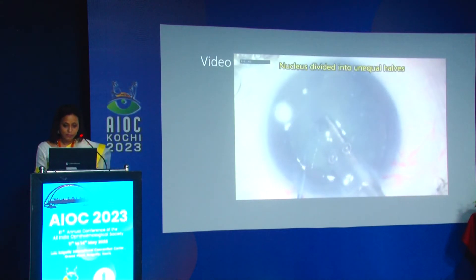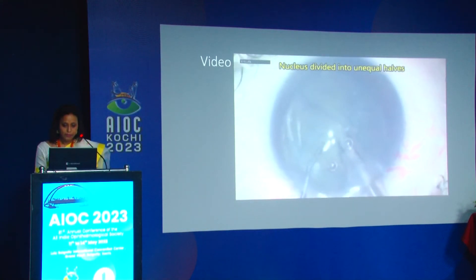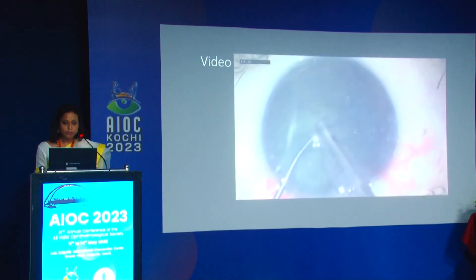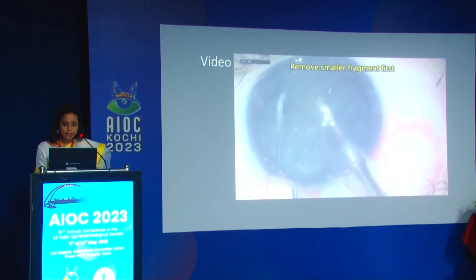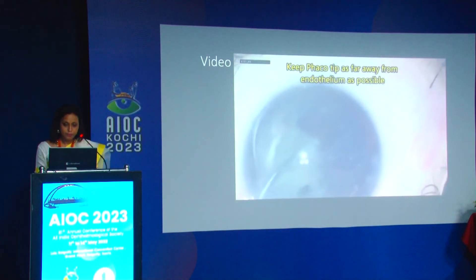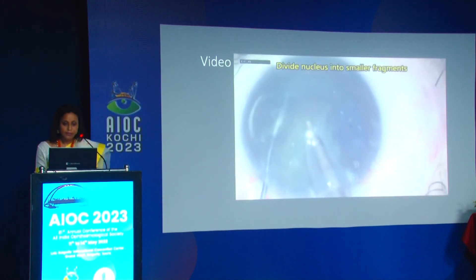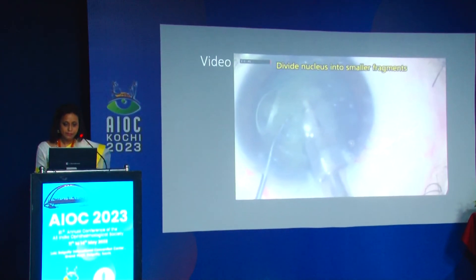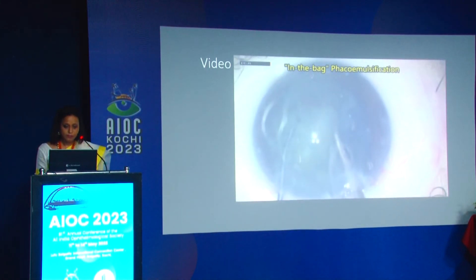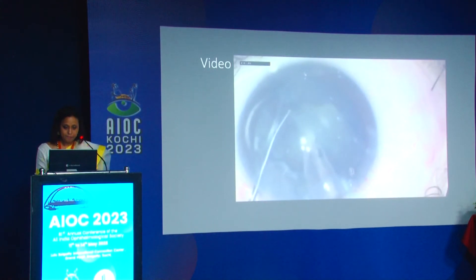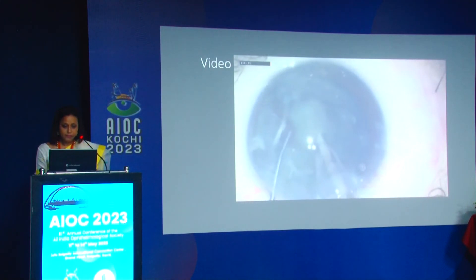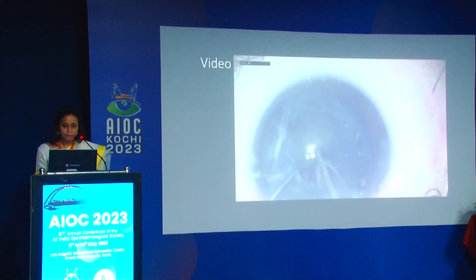Unfortunately my trench is not very centered, so the divide is about two-thirds to one-third, but I continue. It is important to repeatedly inject both viscoelastics. Remove the smaller fragment first, keep the phaco tip as far from the endothelium as possible, and divide the nucleus into smaller fragments — larger fragments have a higher chance of hitting the endothelium. In-the-bag phaco emulsification should be performed as much as possible, avoiding nucleus pieces striking the endothelium.